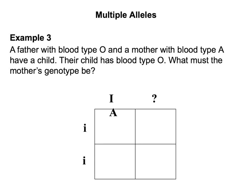One more blood type example: a father with blood type O and a mother with blood type A have a child with blood type O. What must the mother's genotype be? Dad is little i, little i. Mom has IA but could be IA IA or IA little i. If mom were IA IA, all children would be blood type A — but the child is type O. So mom must be heterozygous IA little i, so that when crossed with dad, we get little i little i — blood type O.